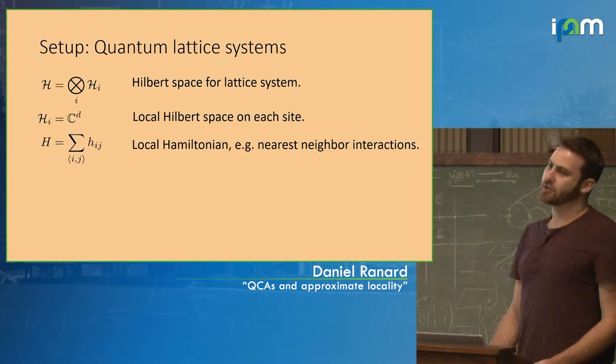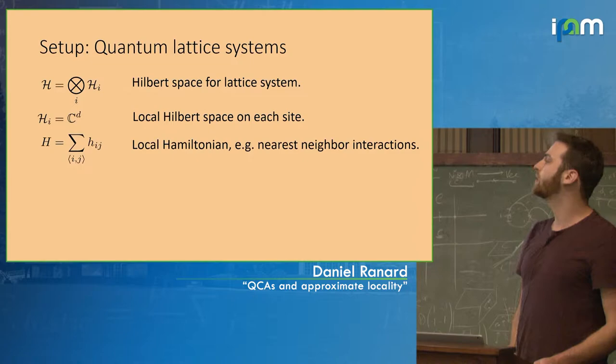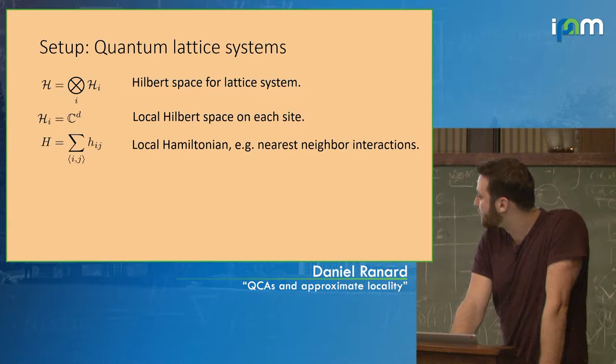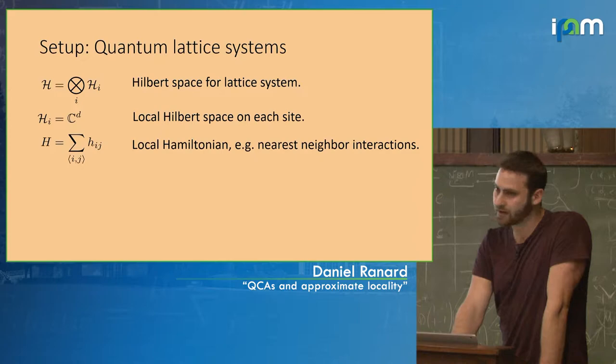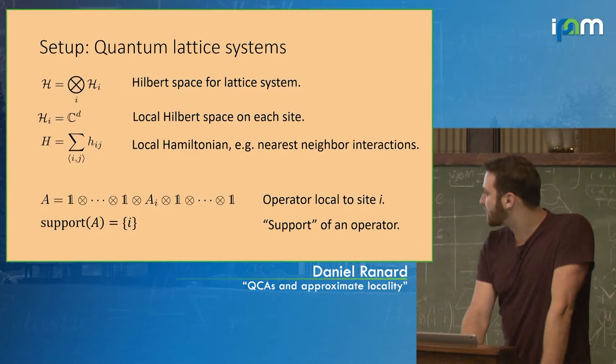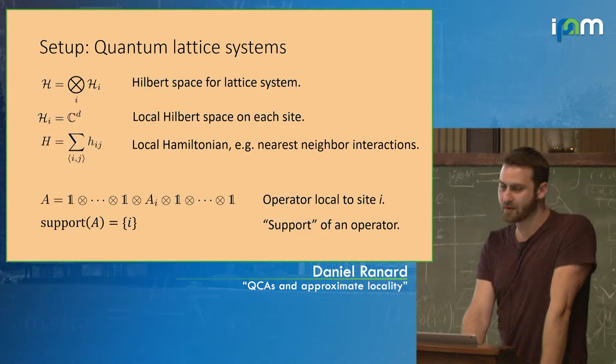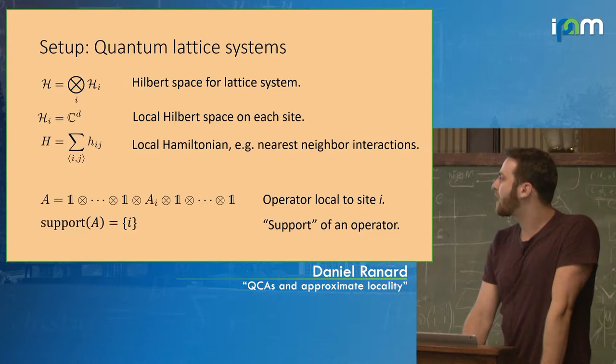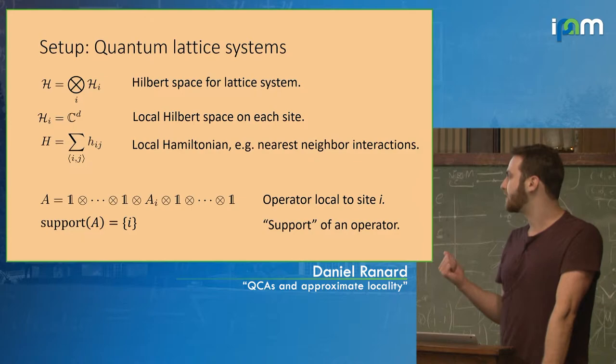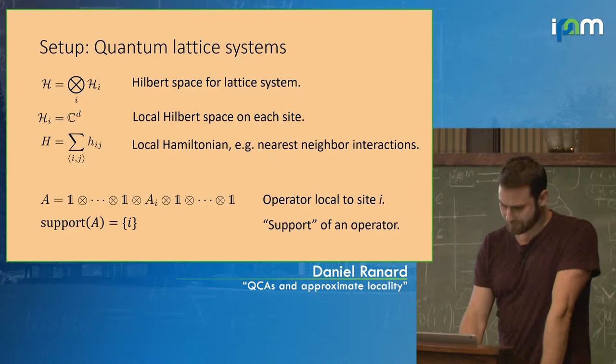The setup is some Hilbert space which is a tensor product of local Hilbert spaces. They'll be finite dimensional and don't all need to be the same dimension. A local operator is an operator that's the identity everywhere except for some handful of sites. The support of the operator refers to the sites on which the operator is not the identity.